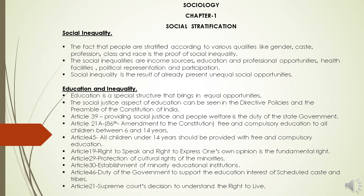People are stratified on the basis of gender — that is male and female — caste, upper caste and lower caste, profession, if they are businessmen or high qualified group versus normal workers or daily labour workers, class, and race. Social inequalities also arise from income group — higher income and lower income — based on education, well-educated and illiterate, and based on professional opportunities, health facilities, political representation and participation. This social inequality is firm.